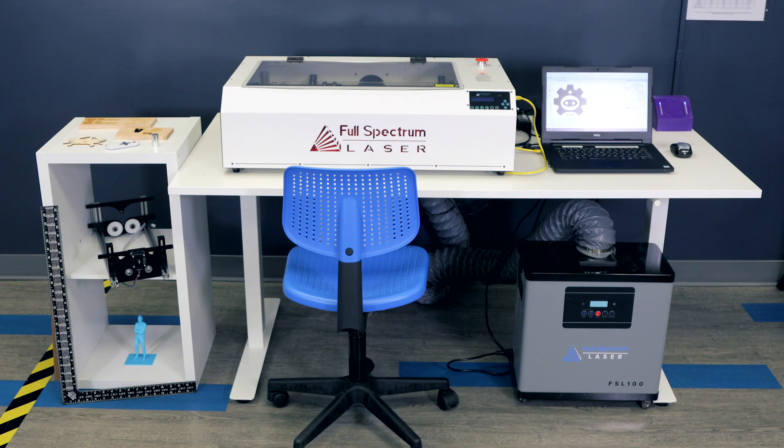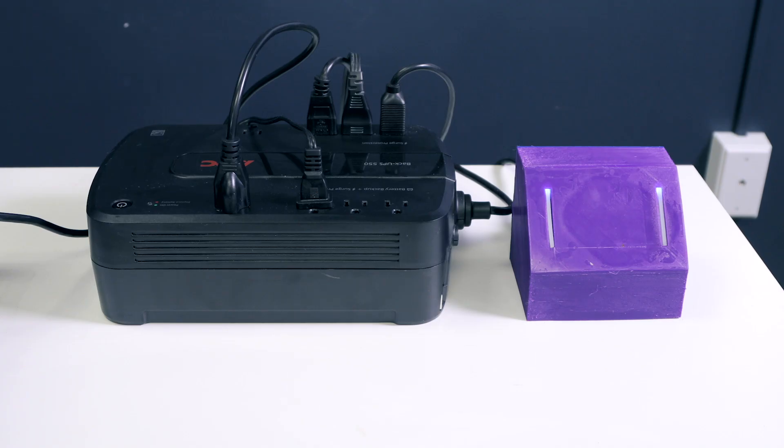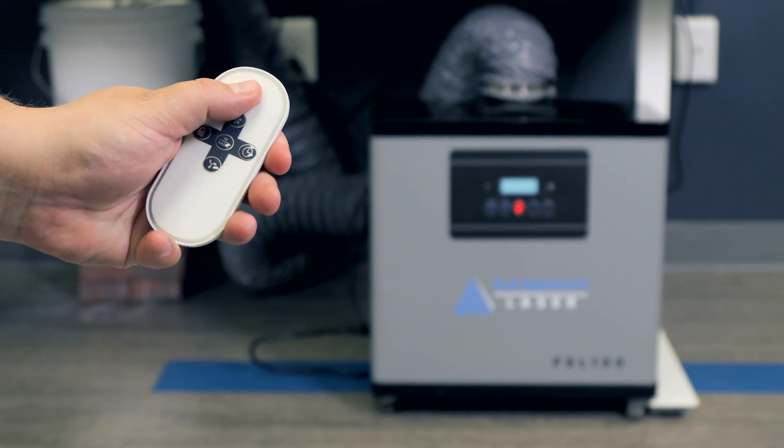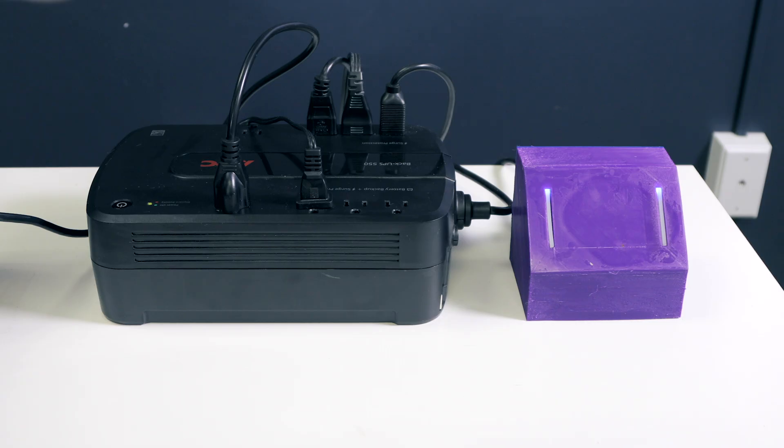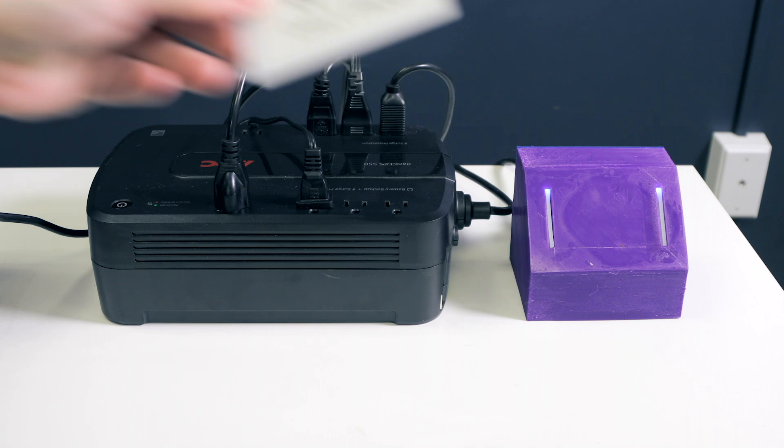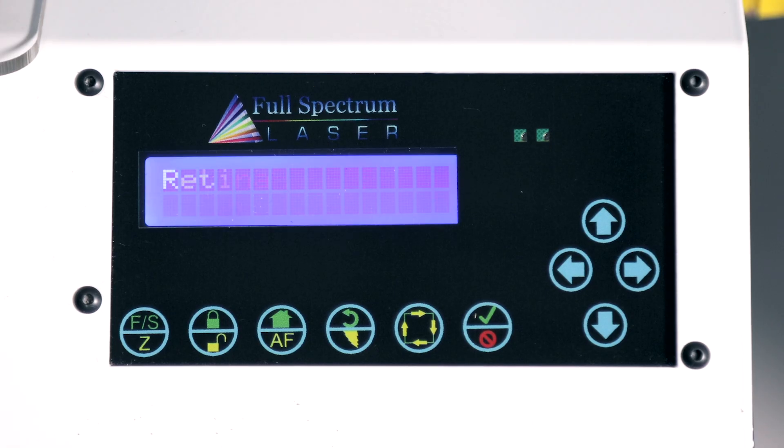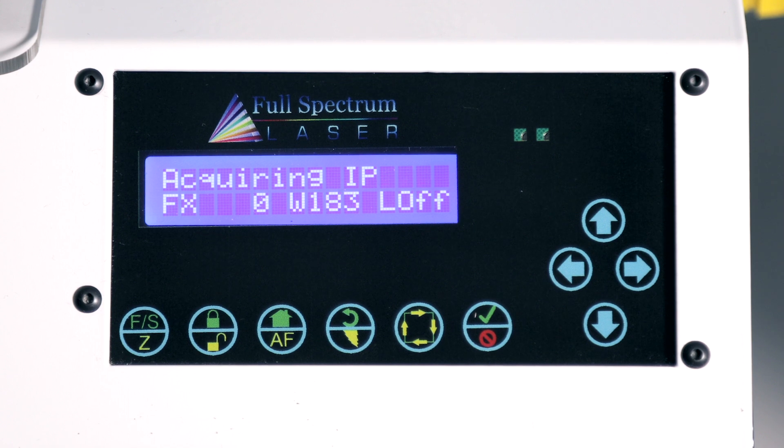Here's how you operate the hobby laser. Turn on the water pump and air compressor with this power button. Turn on the air filter with this remote. Next, use your access card key to turn on the laser. Wait for the laser to boot. Once you see an IP address, the laser is ready to go.